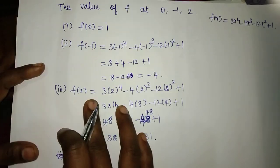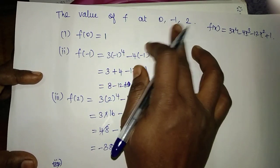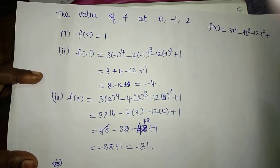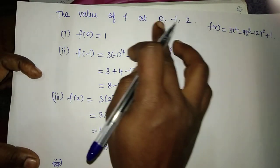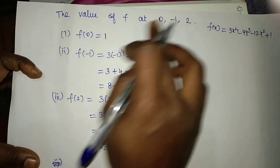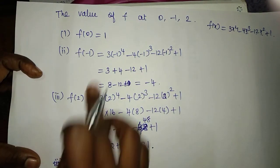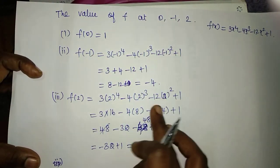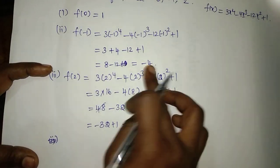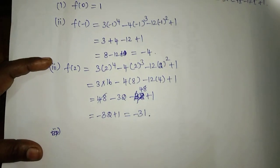At the critical points within the interval [minus 2, 3], the function values are: F of 0 equals 1, F of minus 1 equals minus 4, and F of 2 equals minus 31.